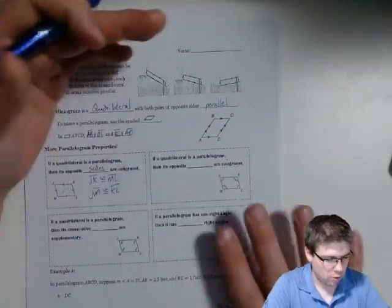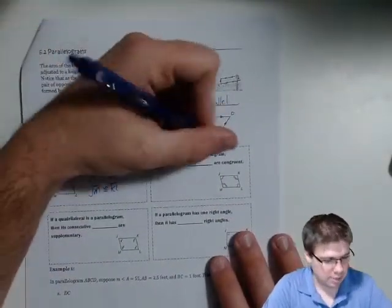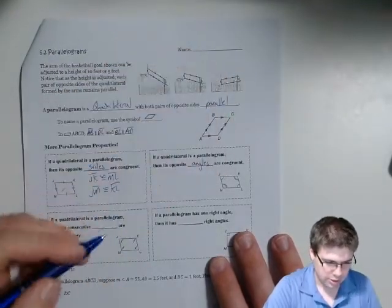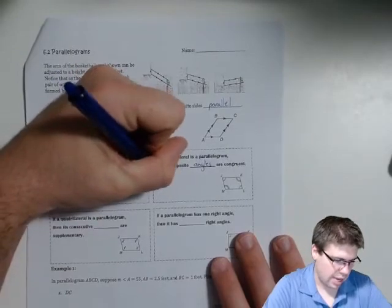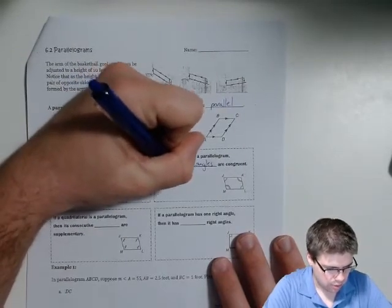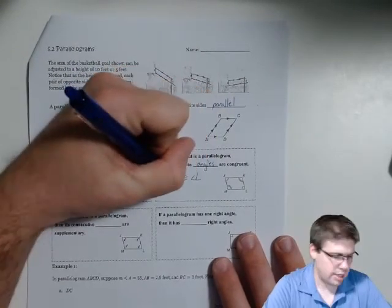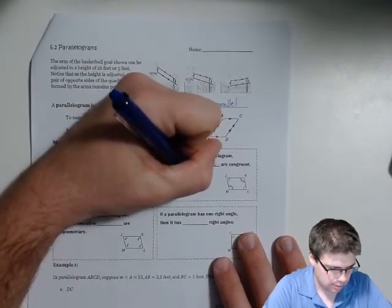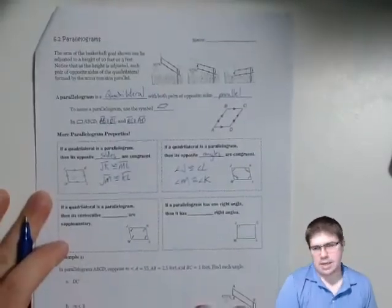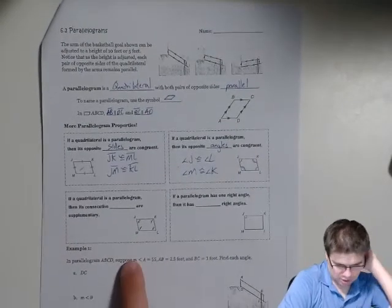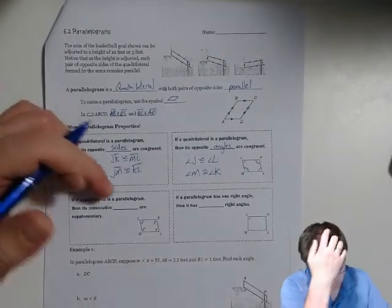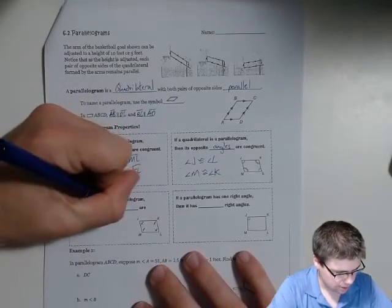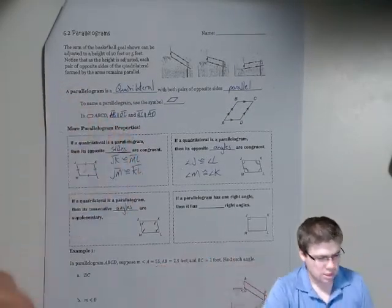Next feature: if a quadrilateral is a parallelogram, then opposite angles are congruent. So we know that angle J is congruent to angle L, and angle M is congruent to angle K. And as I mentioned, in a quadrilateral that's a parallelogram, the consecutive angles are supplementary.